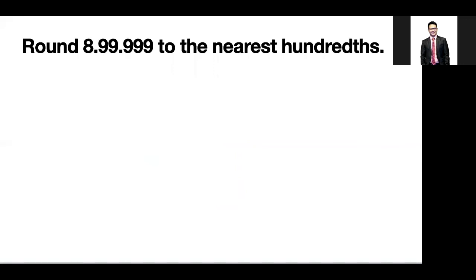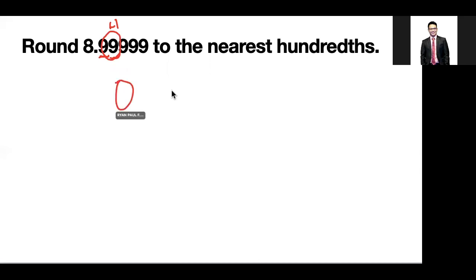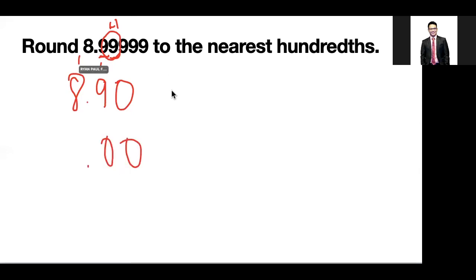Another problem on rounding off: how do we round off 8.99999 to the nearest hundredth? First, we identify the digit in the hundredths place. Because the number on the right side is greater than 5, we add one to the hundredths place. But that makes it 10, so we carry one to the next digit, which is also 9, making it 10 again — that becomes 0 and we add one to the whole number 8, so it becomes 9. The answer is 9.